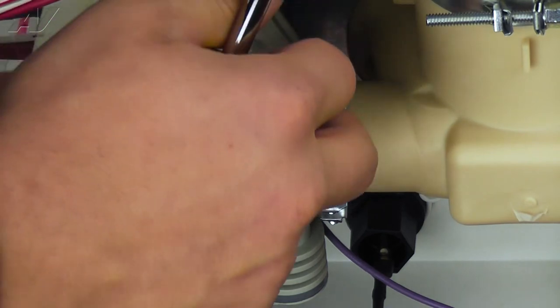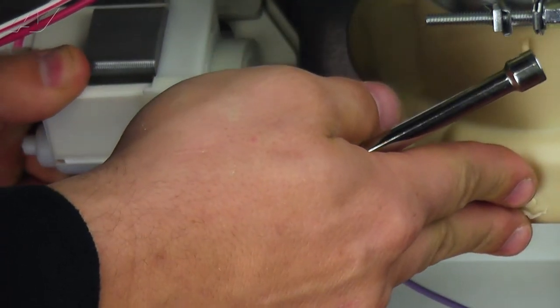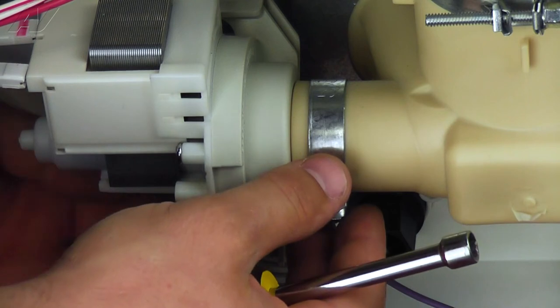Make sure the pump is firmly seated into the sump and move the clamp back over the connection and tighten the 5/16 inch screw.